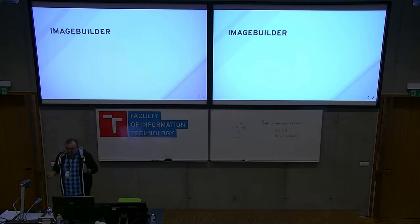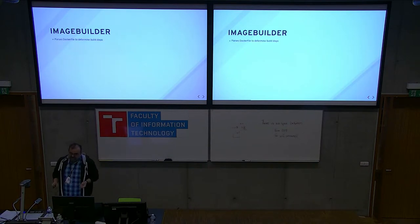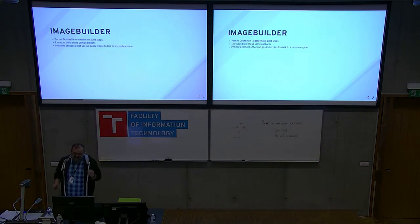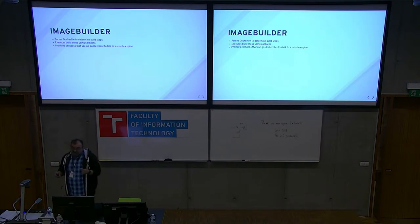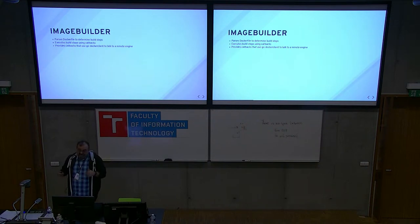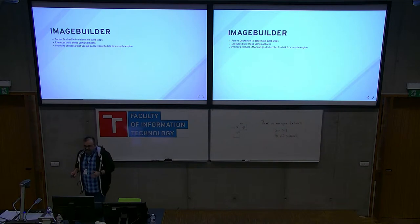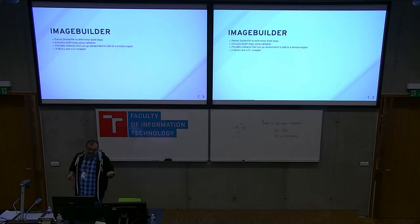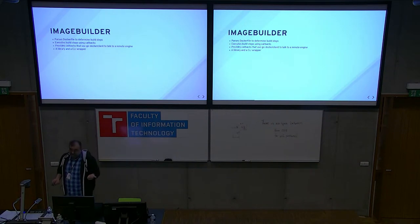The next piece you probably haven't heard of is Image Builder. It's a tool that OpenShift uses to parse Dockerfiles, and then it would actually execute the build using a set of callbacks. The Image Builder command-line program implemented callbacks to do these things by talking to a remote Docker D. So it's very similar in execution to Docker build, but it's a library and a CLI wrapper. In particular, that library lets us get away with not having to implement parsing logic ourselves — that's the thing I really like about Image Builder.